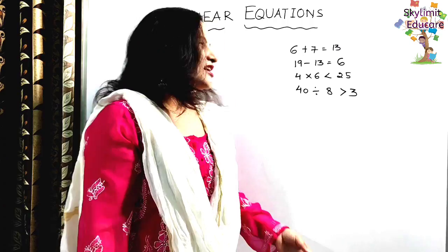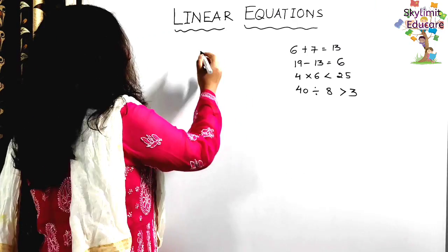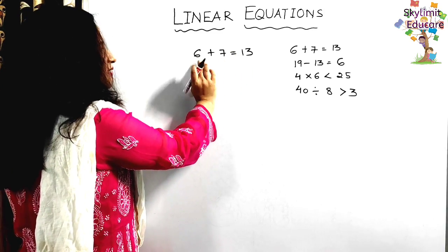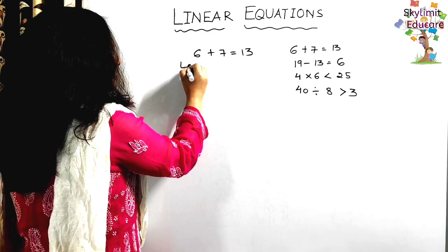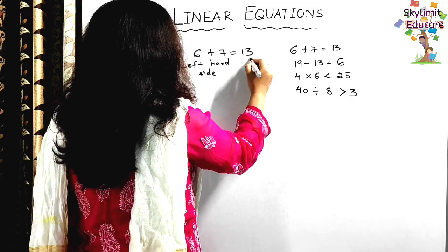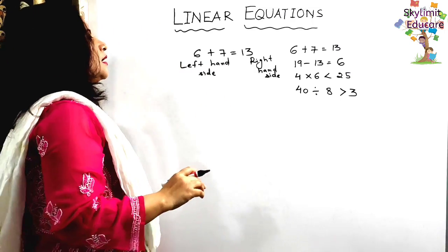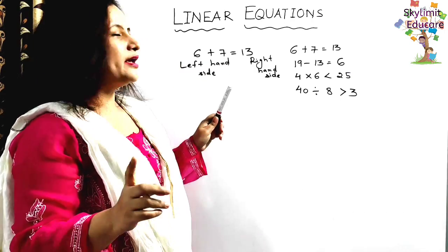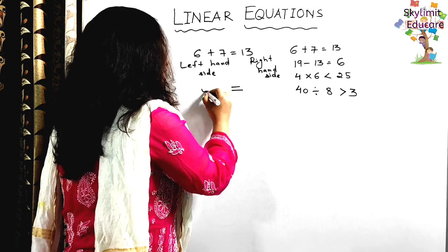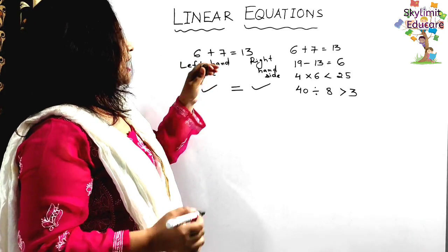I have already written four statements. The first statement is 6 plus 7 is equal to 13. As you can see, 6 plus 7 is 13. This side of the equal to sign is the left-hand side and the other side is the right-hand side. For an equation, there should always be an equal to sign.